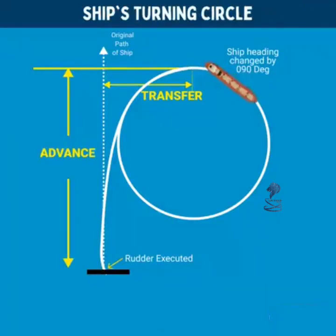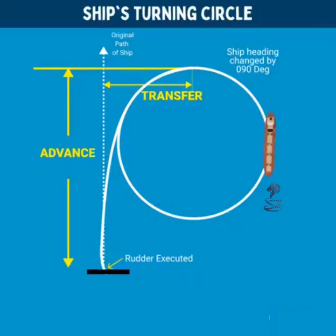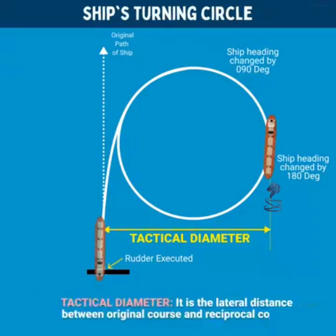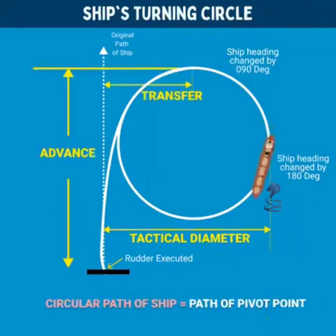Furthermore, the ship continues to traverse a circular path. When the ship's heading changes by 180 degrees from the original course, the lateral distance between the original course and the reciprocal course is called the tactical diameter.